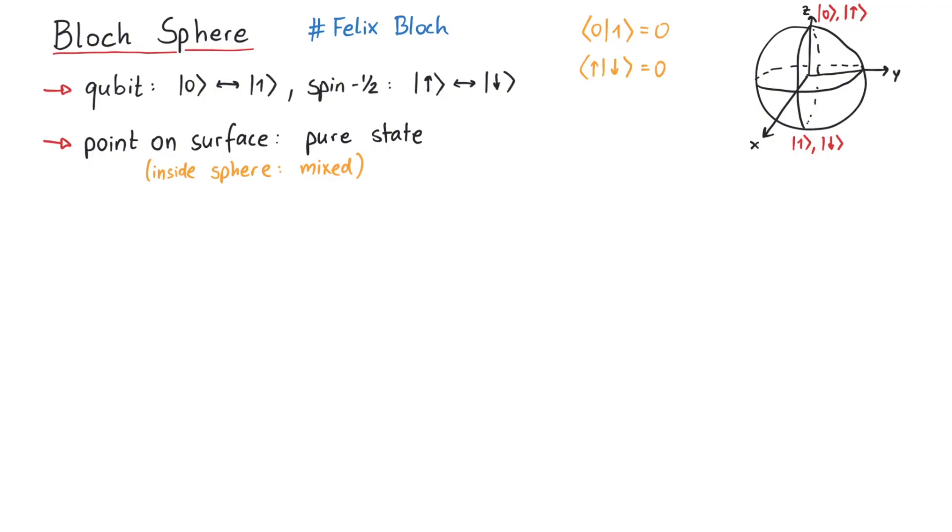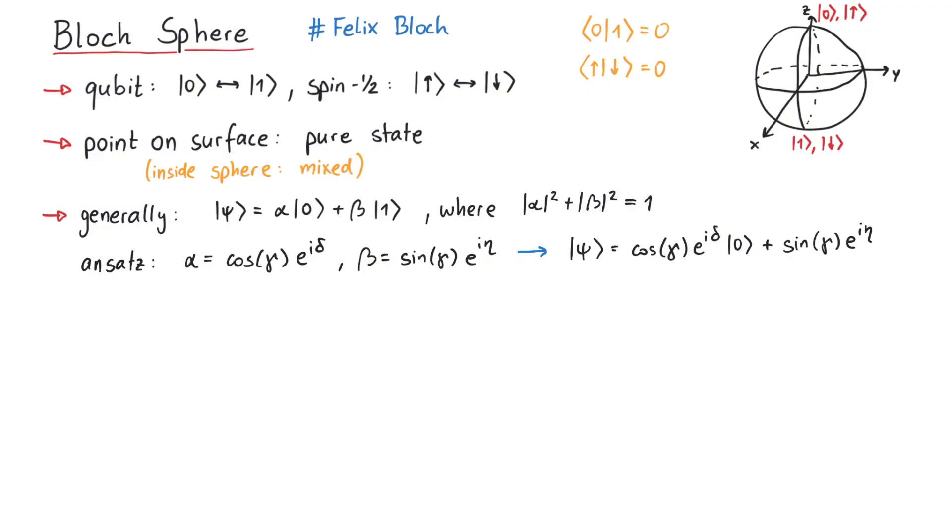Now let's see which point on the sphere corresponds to which superposition. Generally our quantum state can be written as alpha times 0 plus beta times 1, where due to the normalization condition the absolute squares of alpha and beta have to add up to 1. A very general ansatz for alpha and beta is to write them in terms of sine and cosine functions with additional phase factors, since they are complex numbers. However, as we mentioned, an overall phase does not play a role, so only the relative phase is important, which we call omega.